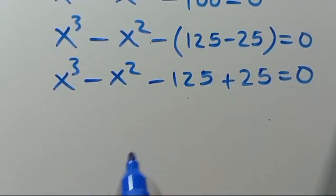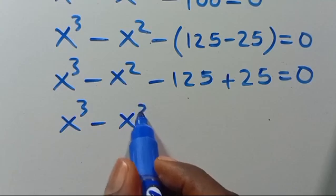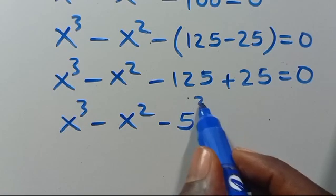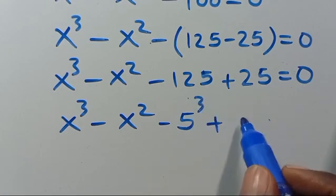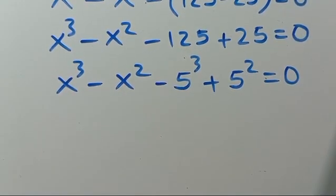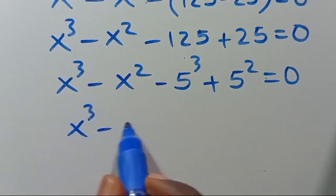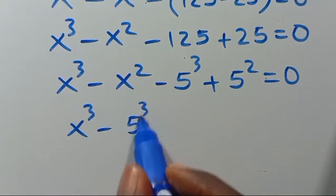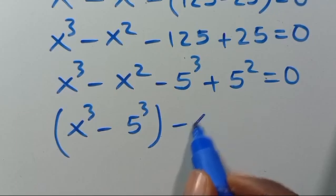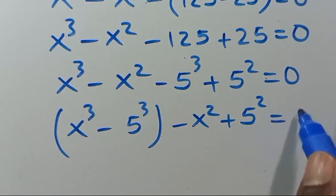So from here, let's regroup. We have X to the power of 3 minus X squared. We can write 125 in base 5 as 5 to the power of 3, and 25 in base 5 as 5 to the power of 2. By regrouping, we have X to the power of 3 minus 5 to the power of 3 in parentheses, likewise minus X squared plus 5 to the power of 2, equals 0.